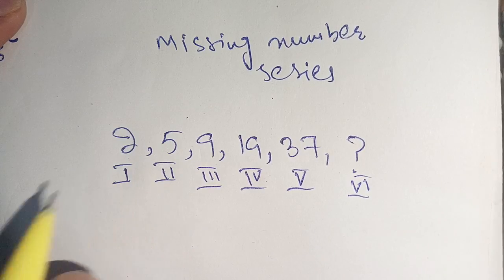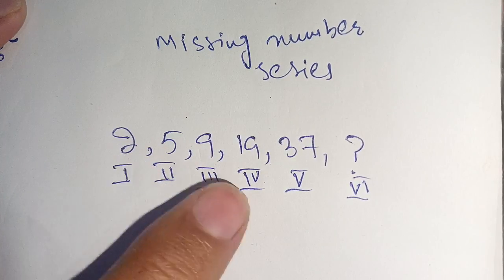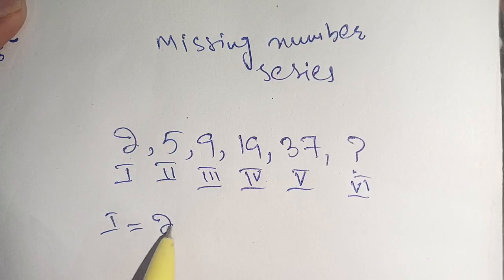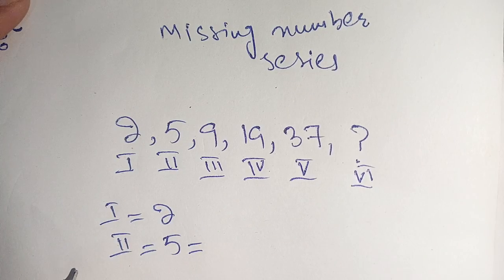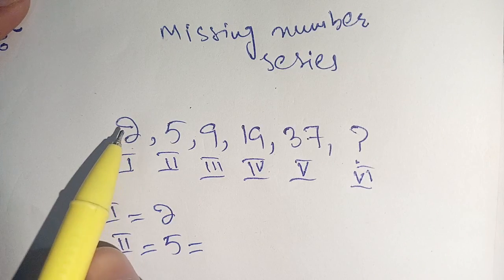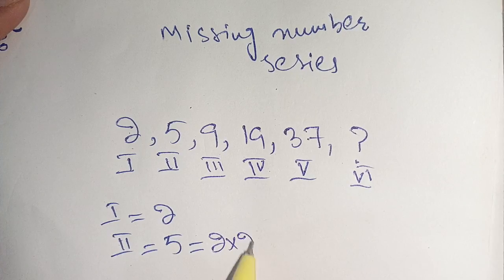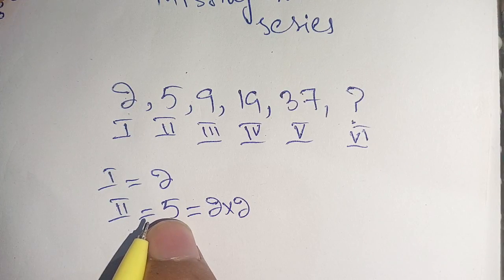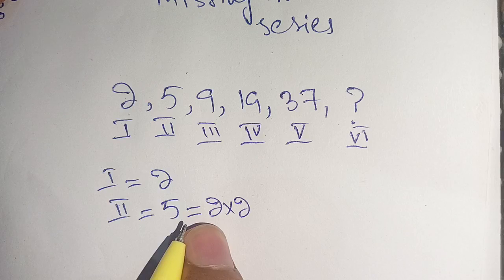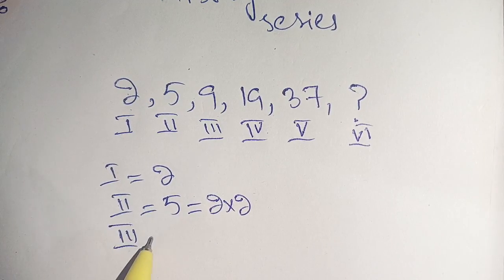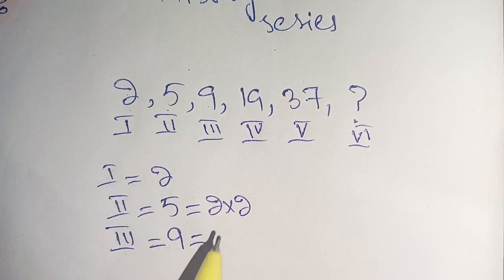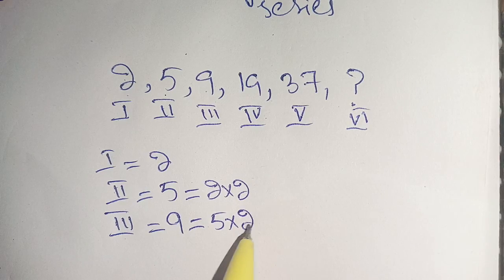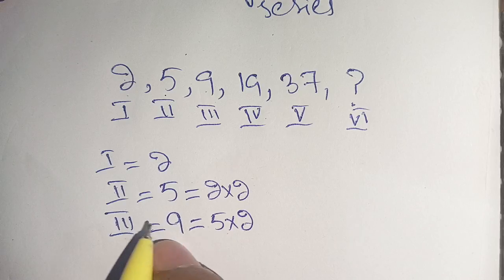First of all, we have to make a pattern so that we can find a relation between the terms. The first term is 2 and the second term is 5. When we multiply 2 by 2, it equals 4, which is nearest to 5 but not equal to 5. For the third term, which is 9, when we multiply the second term by 2 — that is 5 times 2 — it equals 10, but that is not equal to 9, though it is nearest to 9.